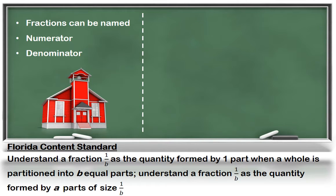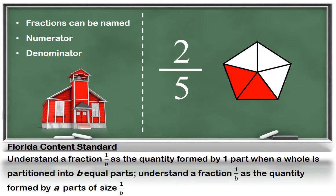Your child will also learn to write fractions in numerical form. The denominator in this fraction, five, refers to the number of parts in the whole. The numerator, in this case two, refers to the number of pieces we are referencing.